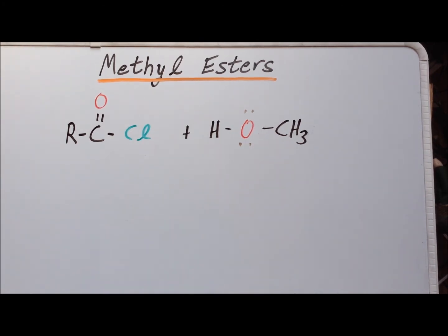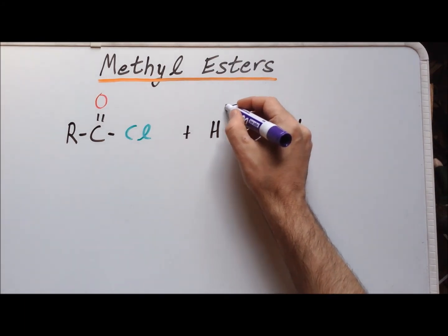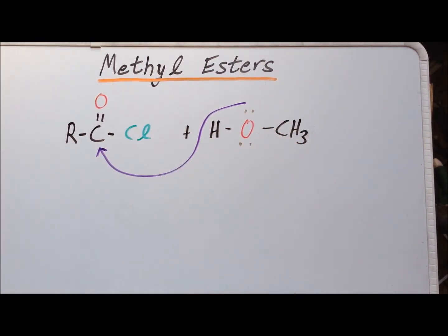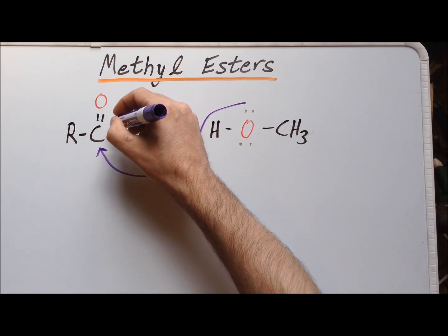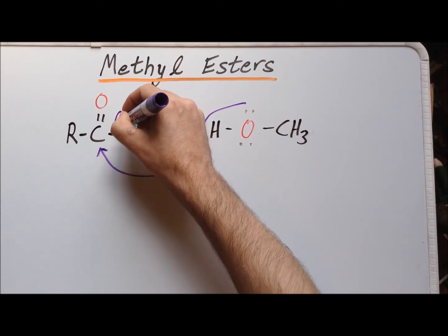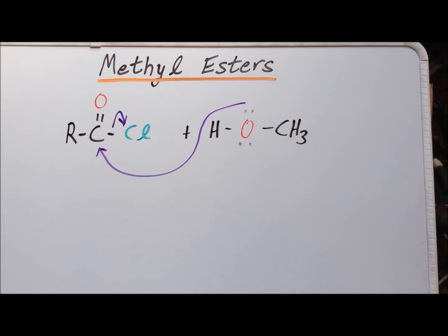The reaction is another example of a nucleophilic acyl substitution. Because of the lone pairs on oxygen, alcohols are nucleophiles, if rather weak nucleophiles. We know that chlorine is an excellent leaving group as chloride. And we also know that the presence of the acyl group facilitates the nucleophilic substitution. So we have nucleophilic attack by the lone pairs of oxygen on the electron deficient carbon of the carbonyl group, while at the same time, we have heterolytic bond cleavage so that the electrons go with chlorine.